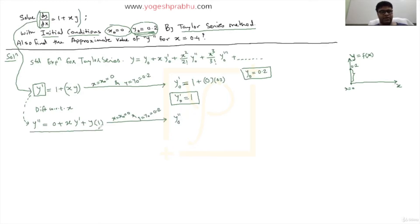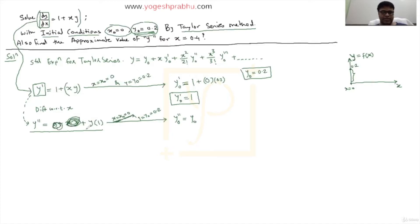Substituting into y double dash equals x·y dash plus y: the first term has x and x naught is zero, so the first term becomes zero. What remains is just the y term, which becomes y naught, and y naught equals 0.2. So y double dash naught is also 0.2.